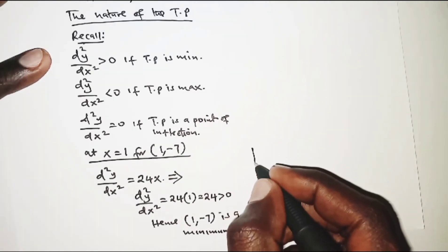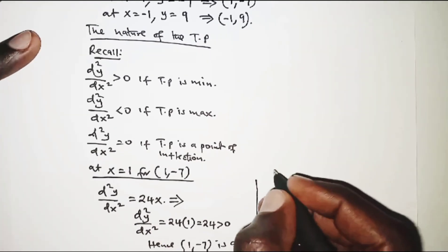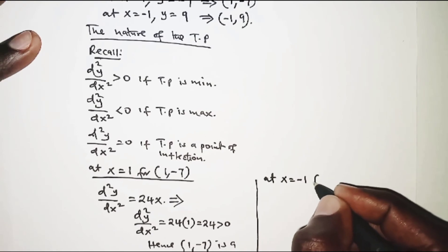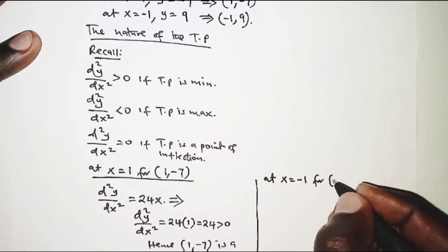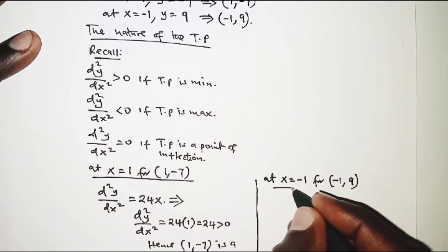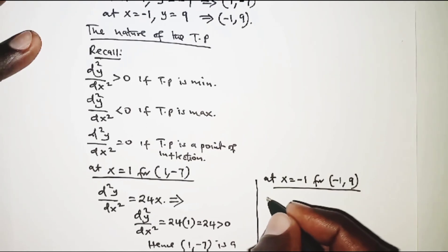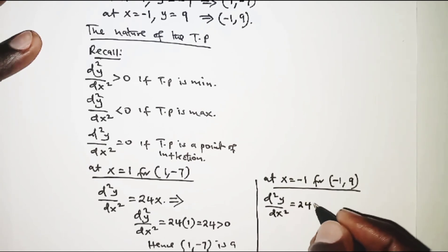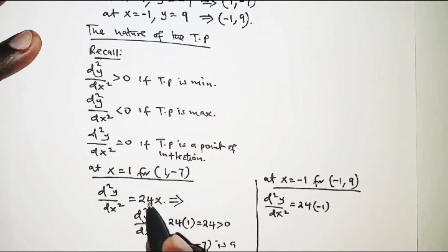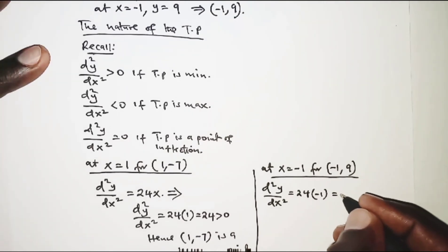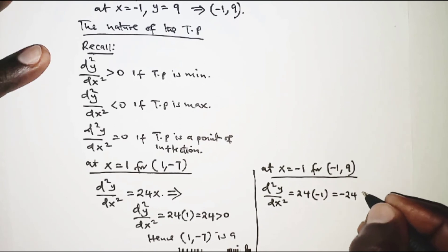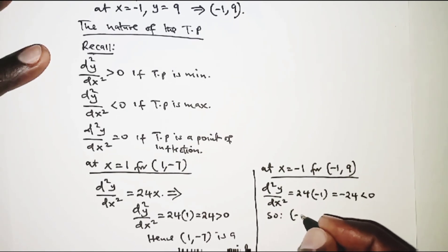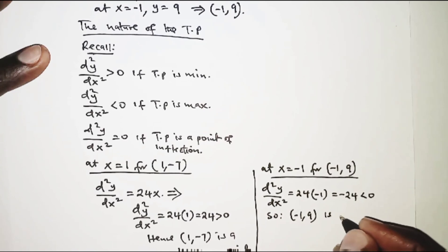Similarly, for the other turning point at x = -1, that is the point (-1, 9), the second derivative will be 24 multiplied by -1, which gives -24. Since -24 is less than 0, it is a negative number, so the point (-1, 9) is a maximum point.